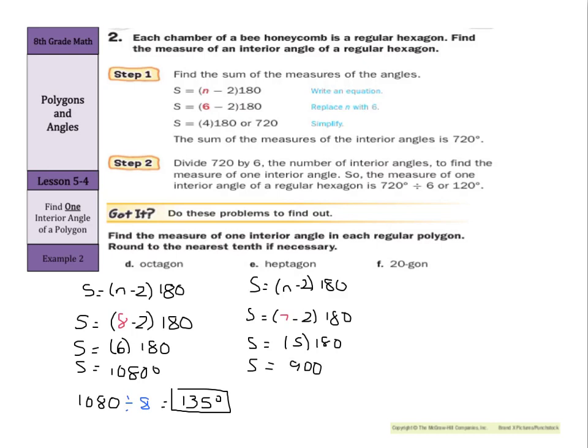So we can take that 900 and divide by 7 sides. And we get 128 point, we're rounding to the nearest tenths, so write this out to the nearest hundredth initially, 5, 7. So then we can look at our tenths spot, look over at our hundredths, and the seven's going to round that 5 up. So my final answer here is 128.6 degrees.